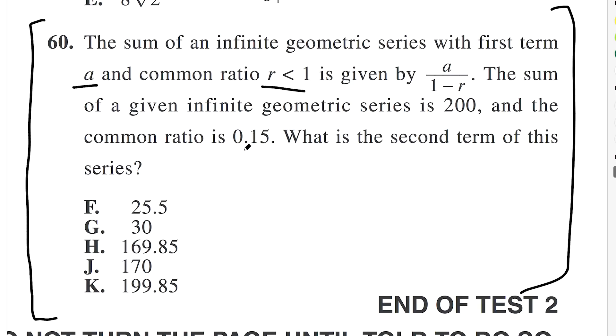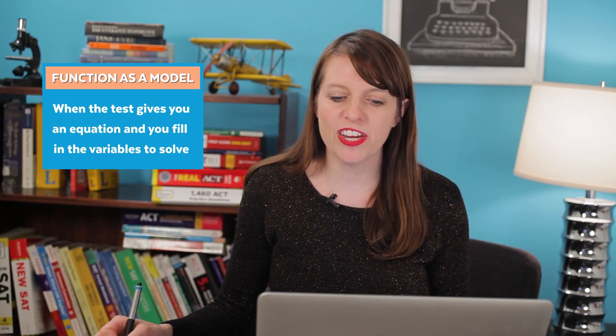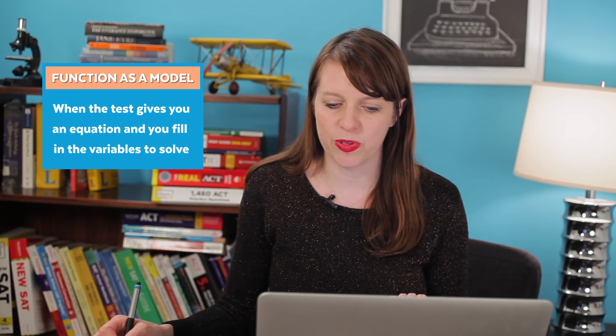So to get this question right you have to do two things. One, this is kind of what I call a function as a model problem. This is sort of like a mixed problem, meaning it's a little bit of one type of problem and a little bit of another type of problem. So not only is it a sequence and series problem, it's about an infinite geometric series, it's also what I call a function as a model problem, meaning that they give you an equation and then you have to fill in that equation with what you know.